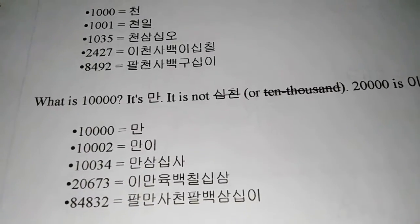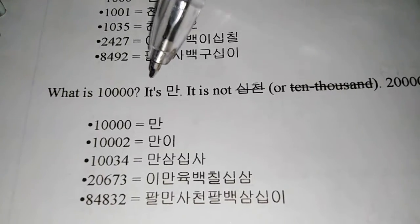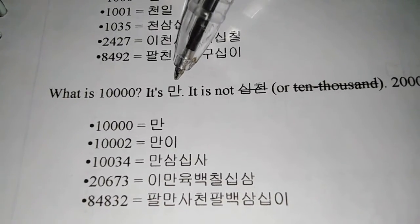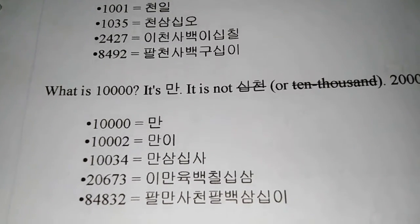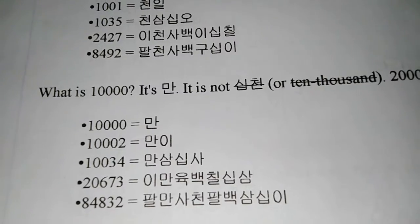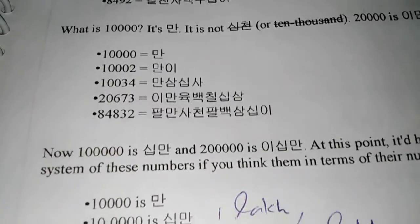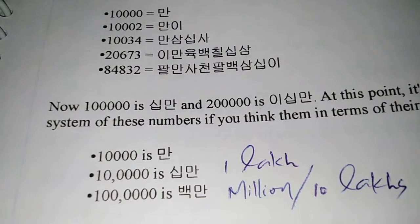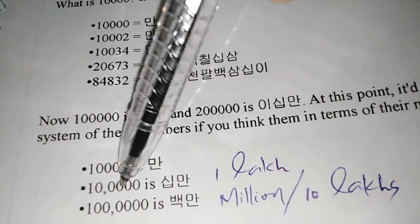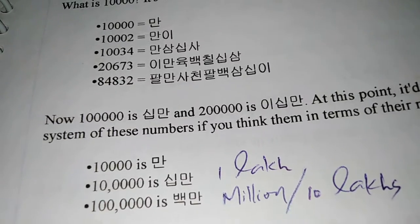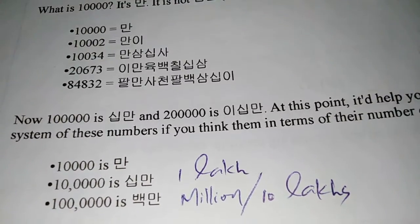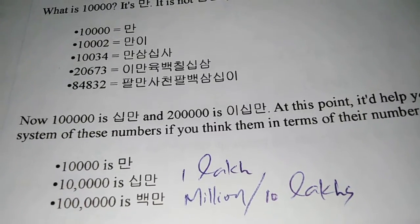The next one is ten thousand. From here on, there are small changes. Ten thousand is man. You wouldn't say ten plus thousand—shib-chon is wrong. So it is man. Ten thousand is man, so this one also it would go e-man, sam-man, o-man, gu-man. You could make literally any number from that. If you have hundred thousand, that would be shib-man. So you have man, and hundred thousand would be shib-man, or one lakh if you are going for the Indian number system.